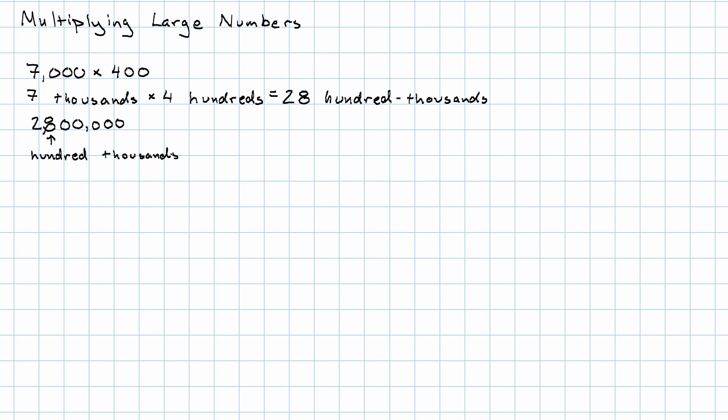Let me show you an example where the noun doesn't work out quite that pretty. 500 times 90 will have 5 hundreds times 9 tens is 5 times 9 is 45.